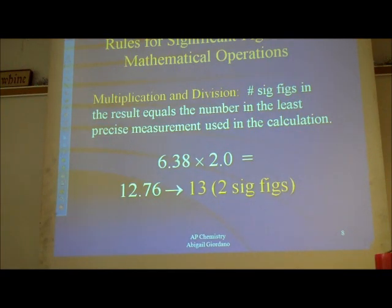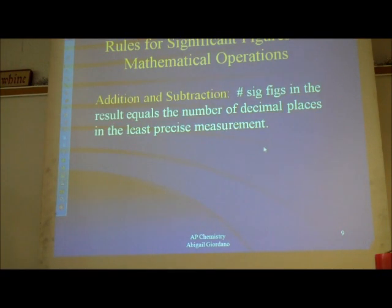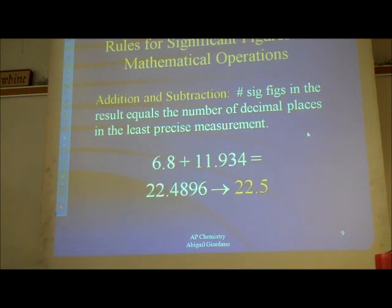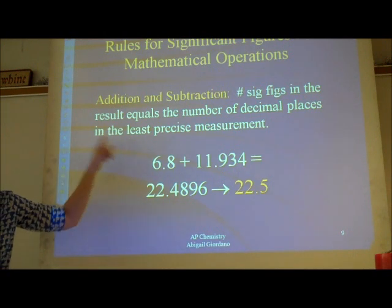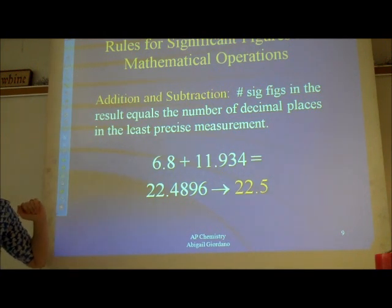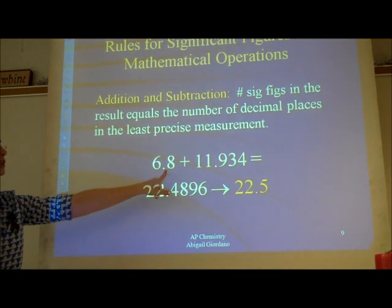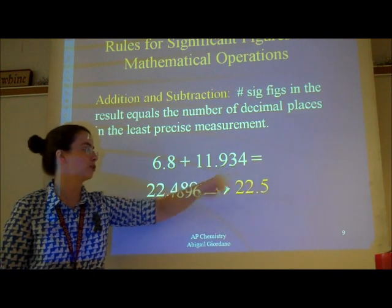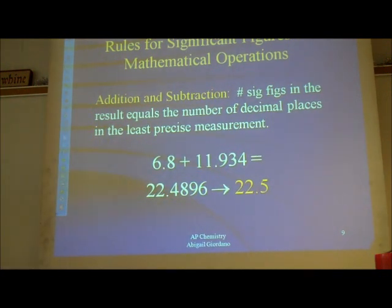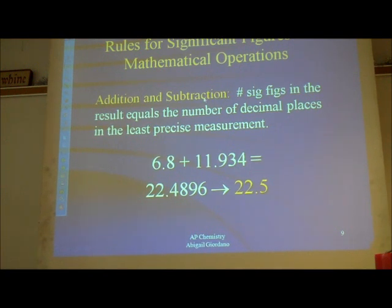There are a very few times — this does not come up often — where you'll be adding or subtracting. Nobody ever remembers this rule because you use it so infrequently. When you're adding or subtracting, you do not count sig figs — you look at the number of decimal places. If one number has one decimal place and another has three, your final answer needs to have one decimal place. Don't forget that rule — everyone always forgets this one.